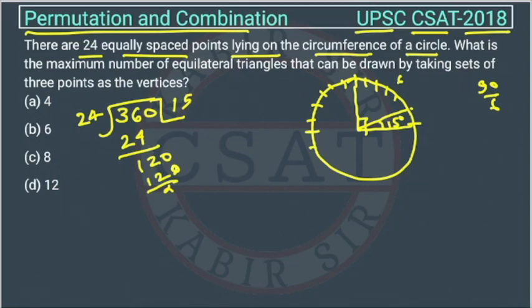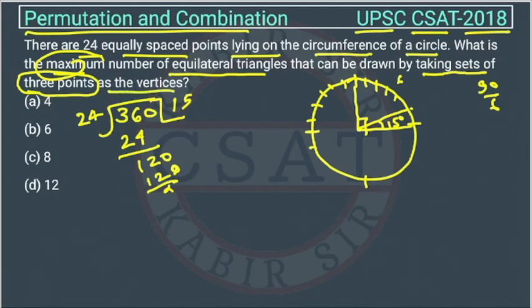So the question is, what is the maximum number of equilateral triangles that can be drawn by taking sets of 3 points as the vertices? So now, what is the question asking?